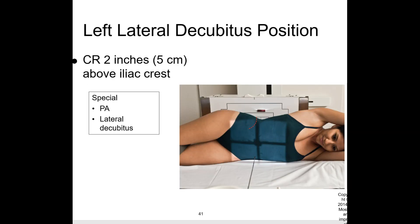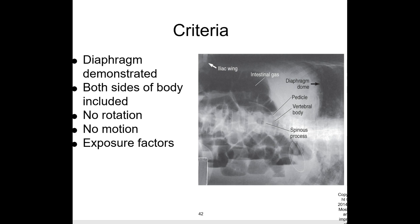Looking at this slide of the left lateral decubitus, you can see it's approximately two inches above the level of the iliac crest. There's a right marker, meaning the left side is down and the right marker is on the upside. The diaphragm is demonstrated here, both sides of the body are included, no rotation, no motion, and make sure you have the correct exposure factors.